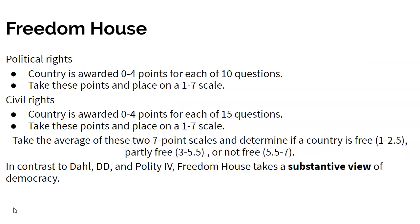We could take a very long time to go through the Freedom House Index, which measures at least 100 questions, if not more. Each of those is potentially controversial, and their inclusion is controversial if we're trying to measure democracy. Their coding is also controversial because it requires people doing the coding to make judgment calls that are not always obvious, and it's not clear that every coder would make the same judgment call.